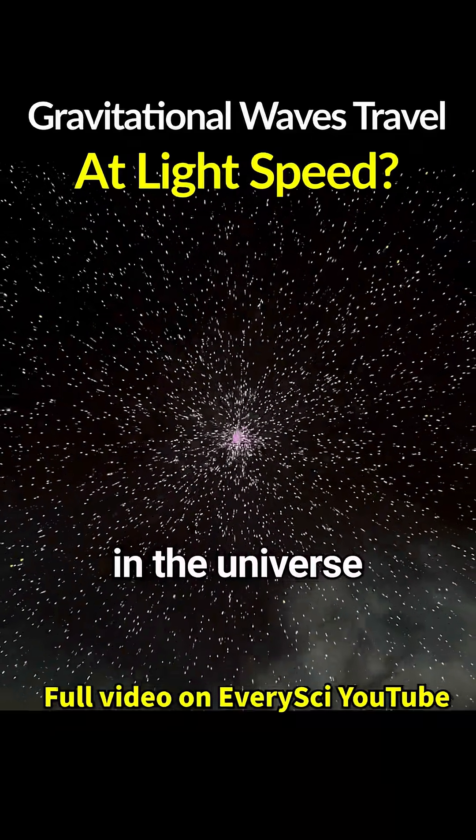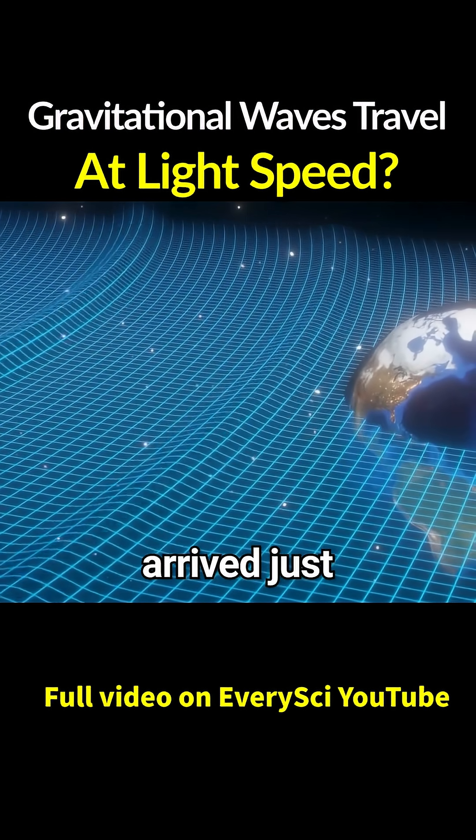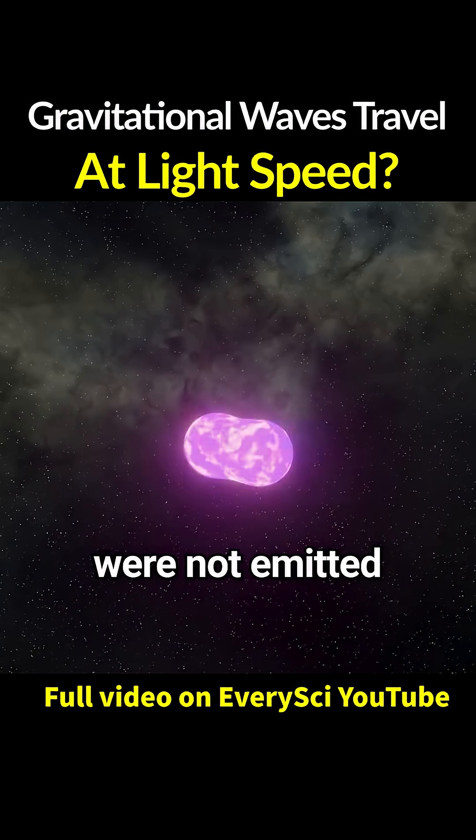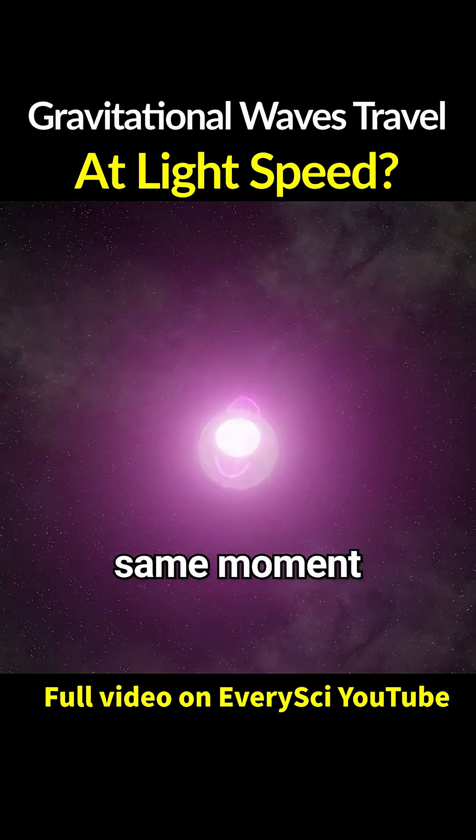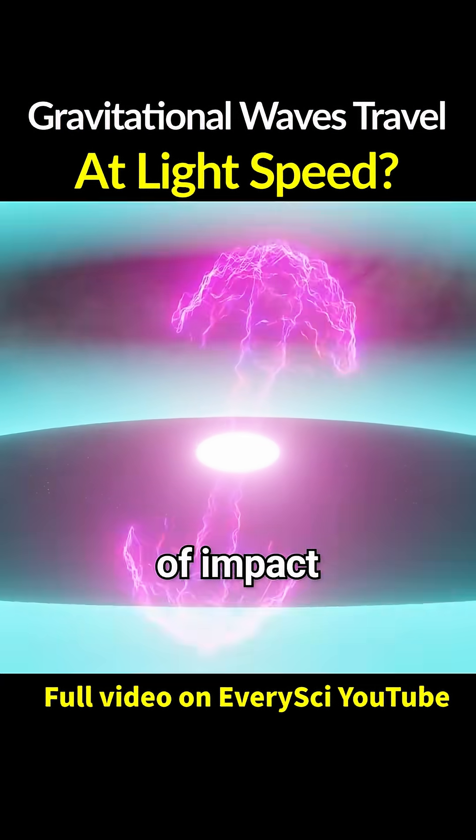But the most important detail was the gravitational waves and the gamma rays arrive just 1.7 seconds apart. This meant the two signals were not emitted at the exact same moment. Gravitational waves are emitted just before the neutron stars collide, and they peak at the moment of impact.